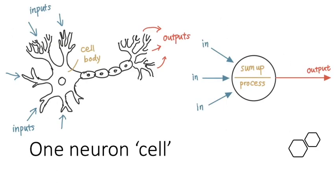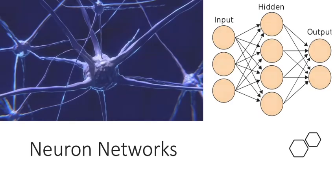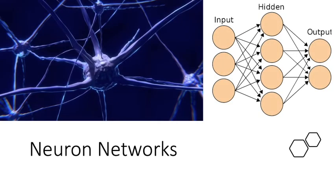Neural network is a machine learning method inspired by biological neurons. It consists of layers of algorithms that stack together, like how neurons are connected, to recognize underlying relationships in a set of data.